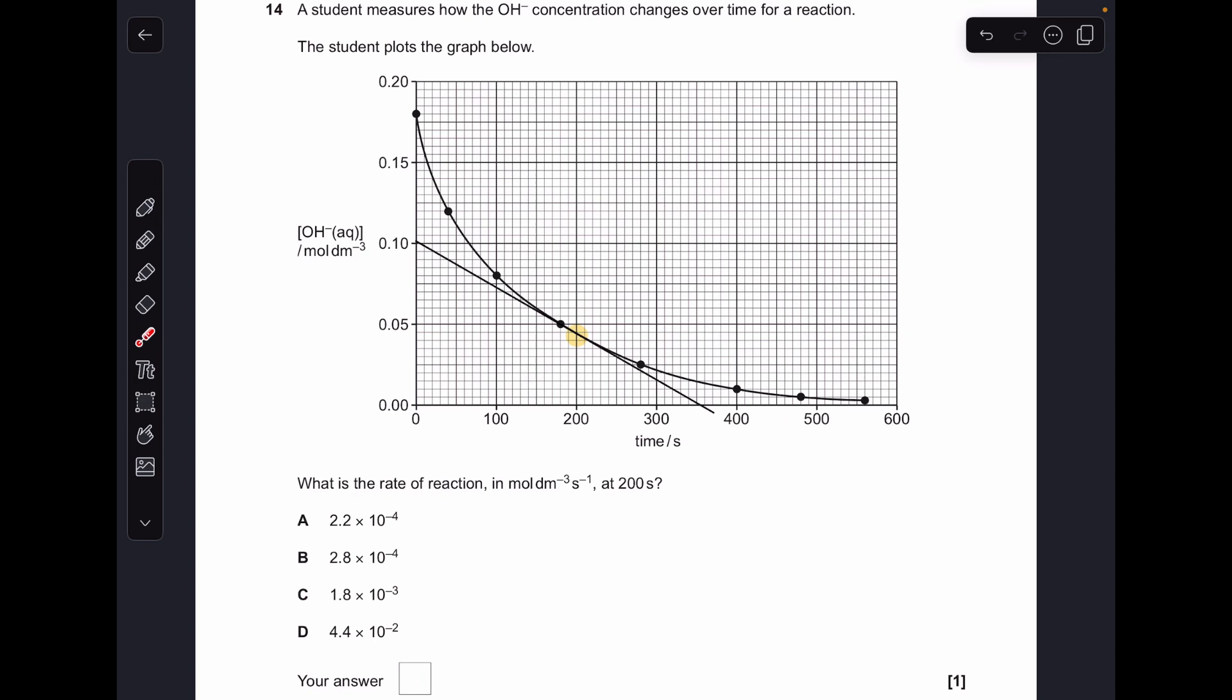Number fourteen. If we want to calculate the rate at 200 seconds, we draw a tangent to the curve at 200 seconds and we calculate the change in Y and divide that by the change in X. You can see the change in Y is 0.1, the change in X is 350, and when you put that in your calculator you get option B.